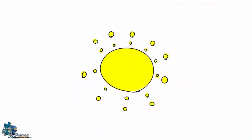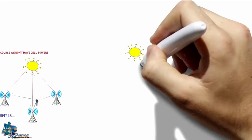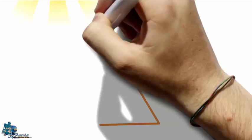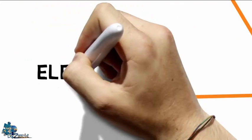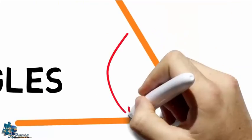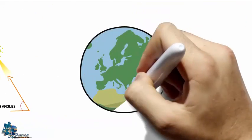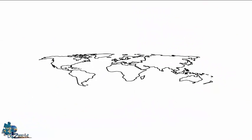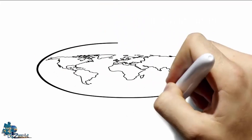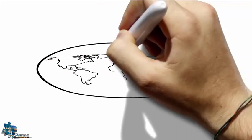We don't have cell towers, but we have something similar: sun rays — in other words, elevation angles. We can do this either on a ball or on flat ground, but in this video I'm going to show you how to track the sun on the flat ground only.